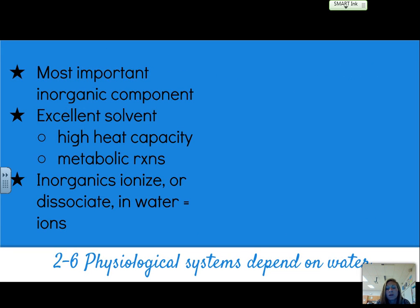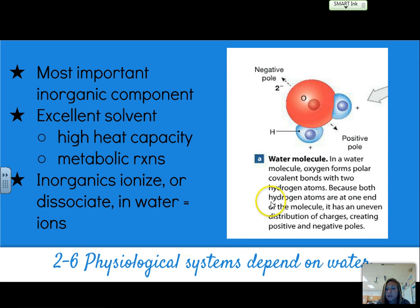Section 2.6 talks about why we depend on water. It is our most important inorganic component — it's a great solvent, it has a high heat capacity, it helps with metabolic reactions, and it can ionize or dissociate inorganic compounds. We can get ions from that process, which help our systems function properly. Water's positive and negative poles create the polarity of the molecule and all of its special, unique properties.